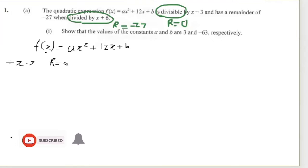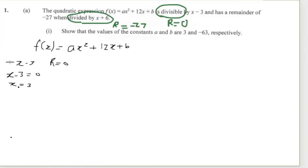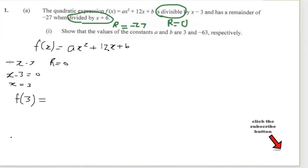We can get the remainder by substituting into the polynomial. If we set x minus 3 equal to zero then we solve, carrying the minus 3 over, so x = 3. Substituting 3 into the function means we will get zero, and this zero signifies the remainder.